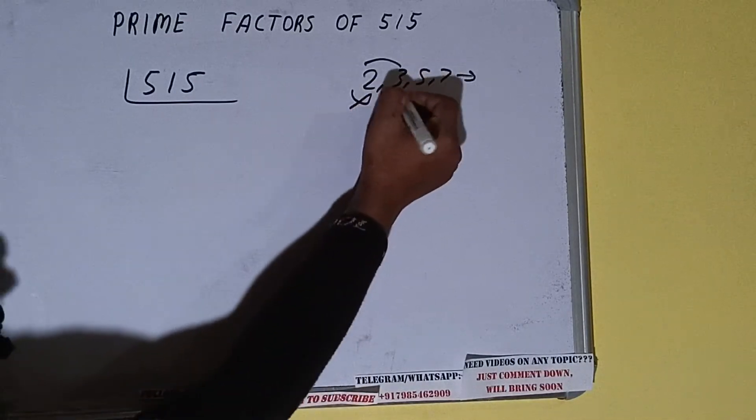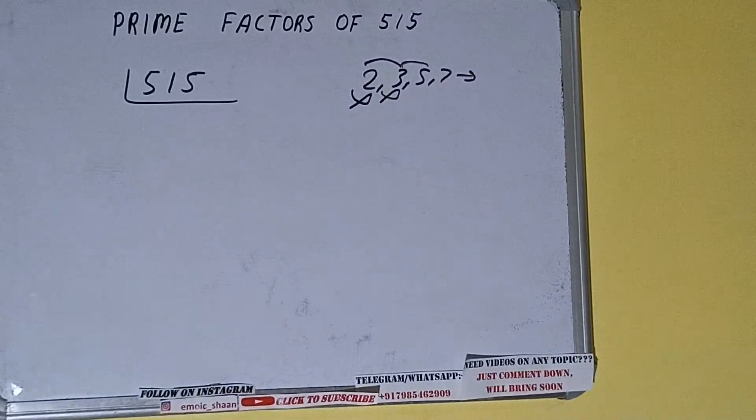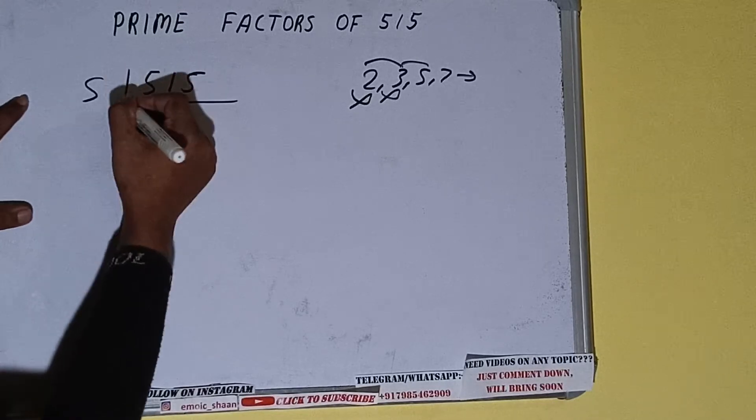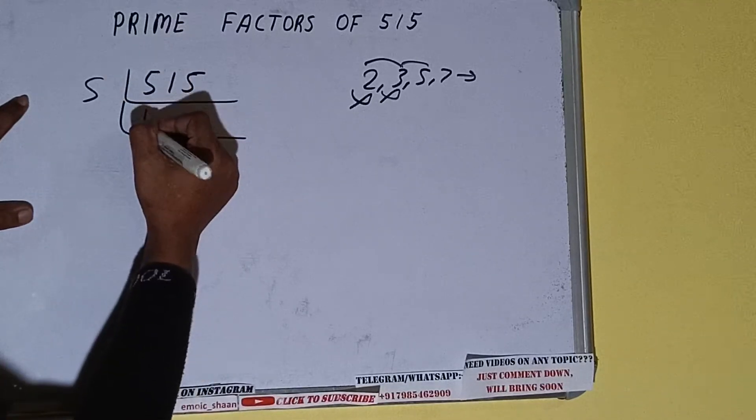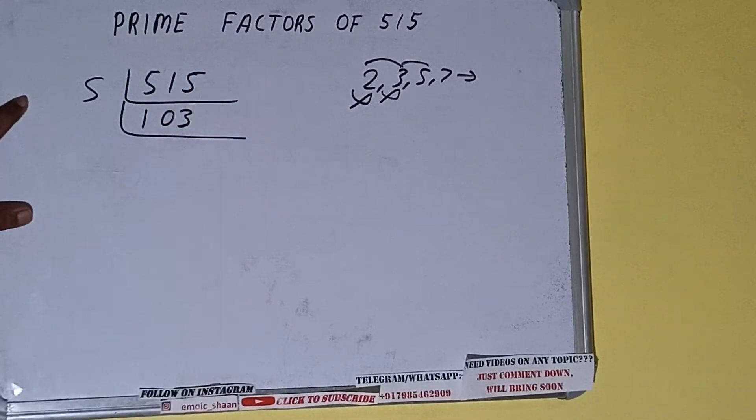Let's check with five. The last digit is five, so it is divisible by five. So divide it and we'll be having 103. Now is this 103 further divisible by five? The answer is no.